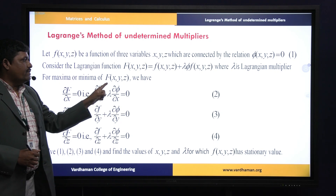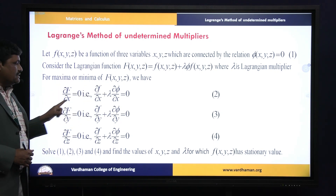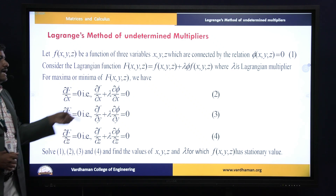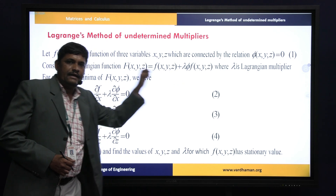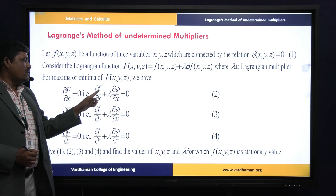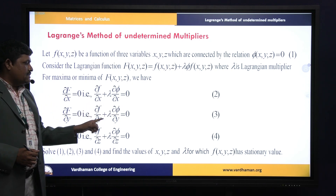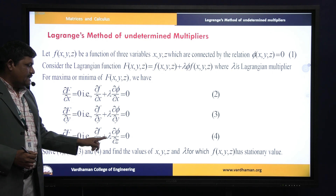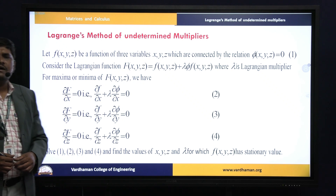For maxima or minima of f(x, y, z), we have ∂F/∂x = 0, ∂F/∂y = 0, and ∂F/∂z = 0. Since capital F is the combination of small f and φ, these expand to: ∂f/∂x + λ·∂φ/∂x = 0, ∂f/∂y + λ·∂φ/∂y = 0, and ∂f/∂z + λ·∂φ/∂z = 0.